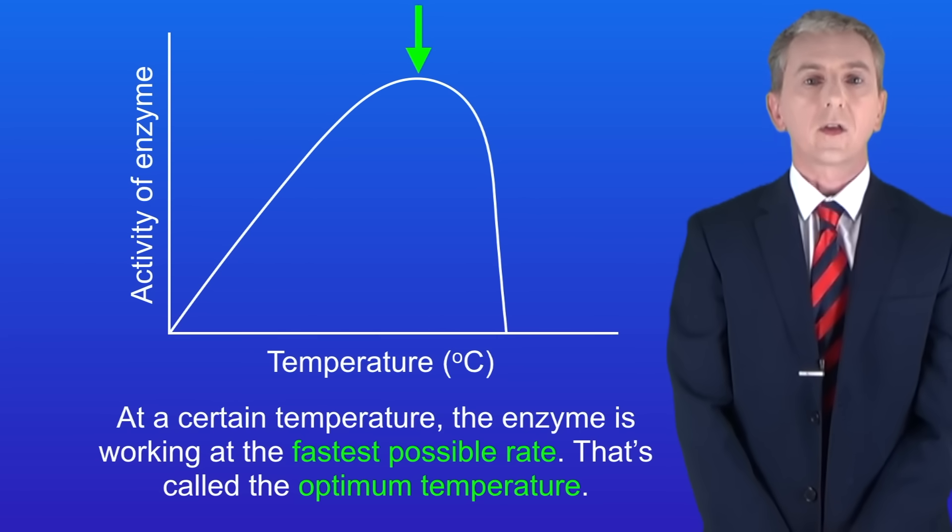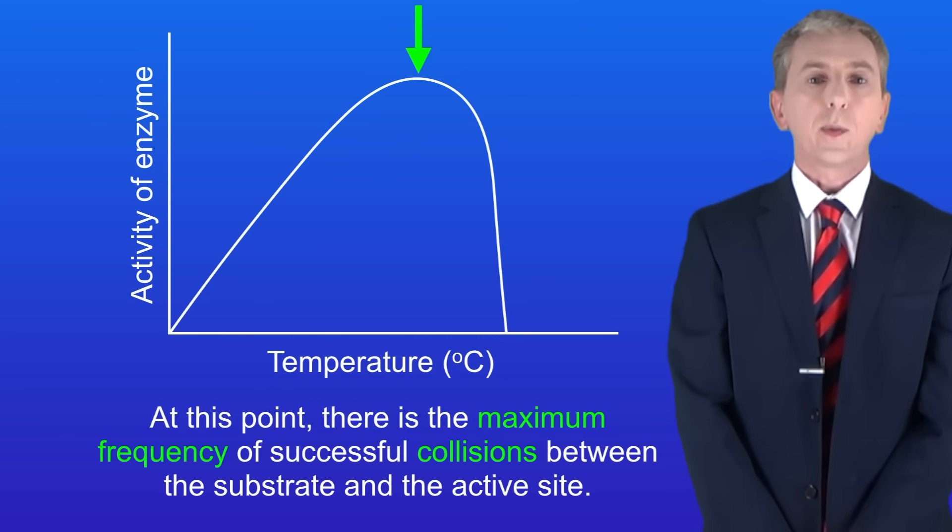At a certain temperature the enzyme is working at the fastest possible rate, and that's called the optimum temperature. At this point there's the maximum frequency of successful collisions between the substrate and the active site. For most human enzymes the optimum temperature is 37 degrees celsius, which is human body temperature.